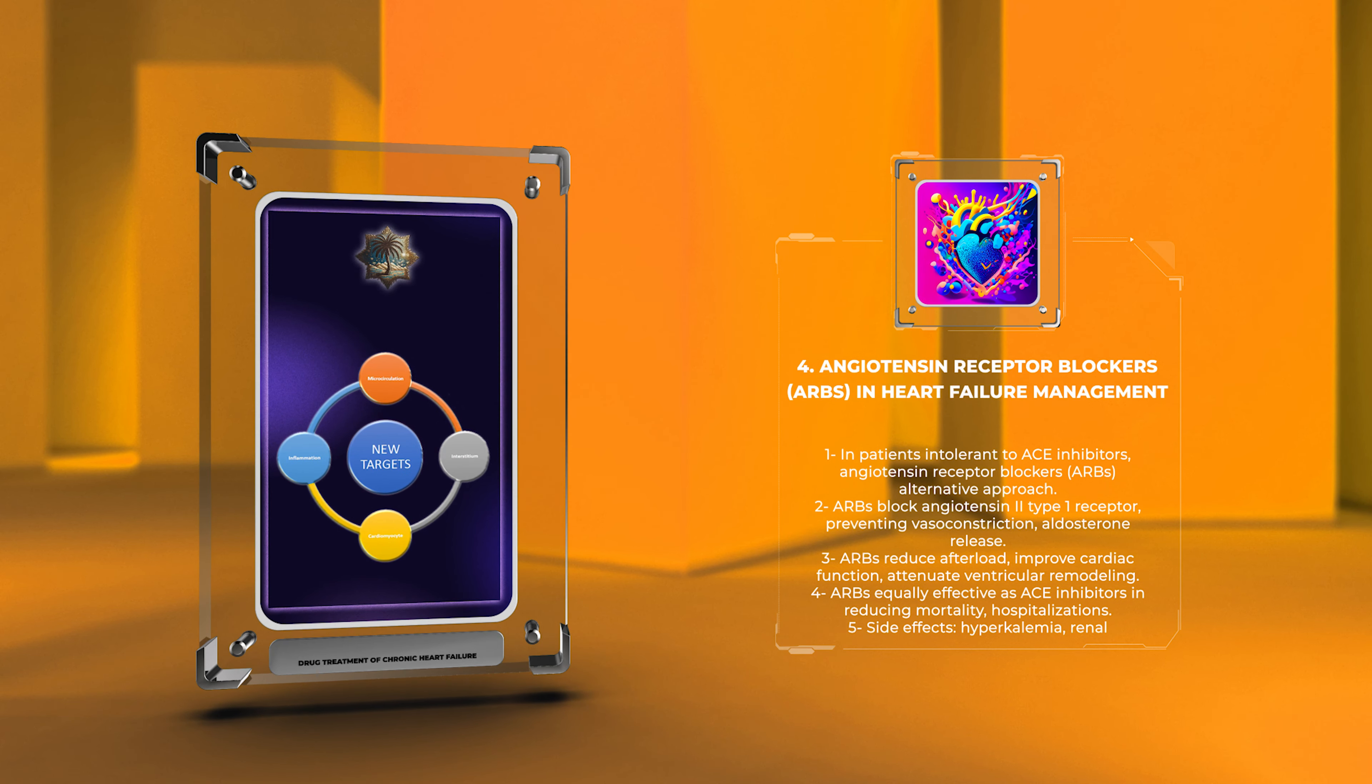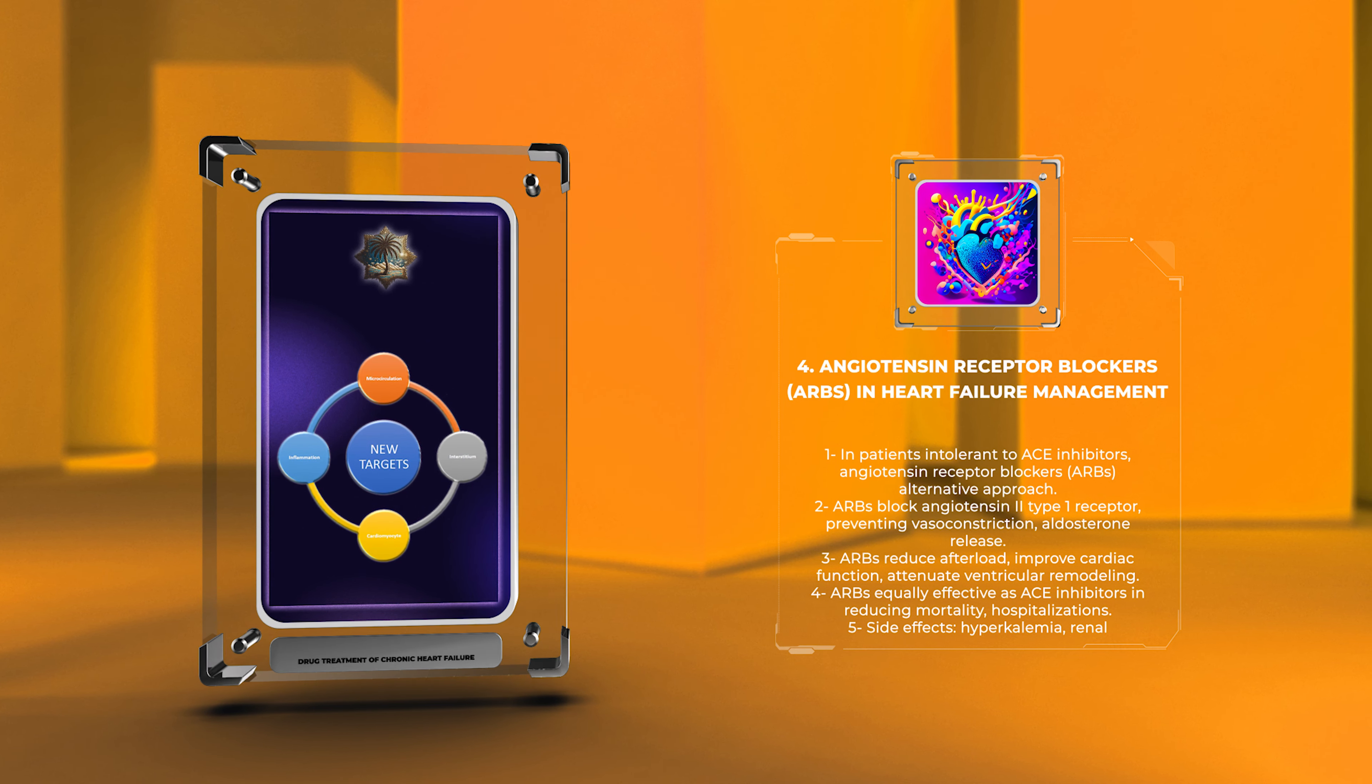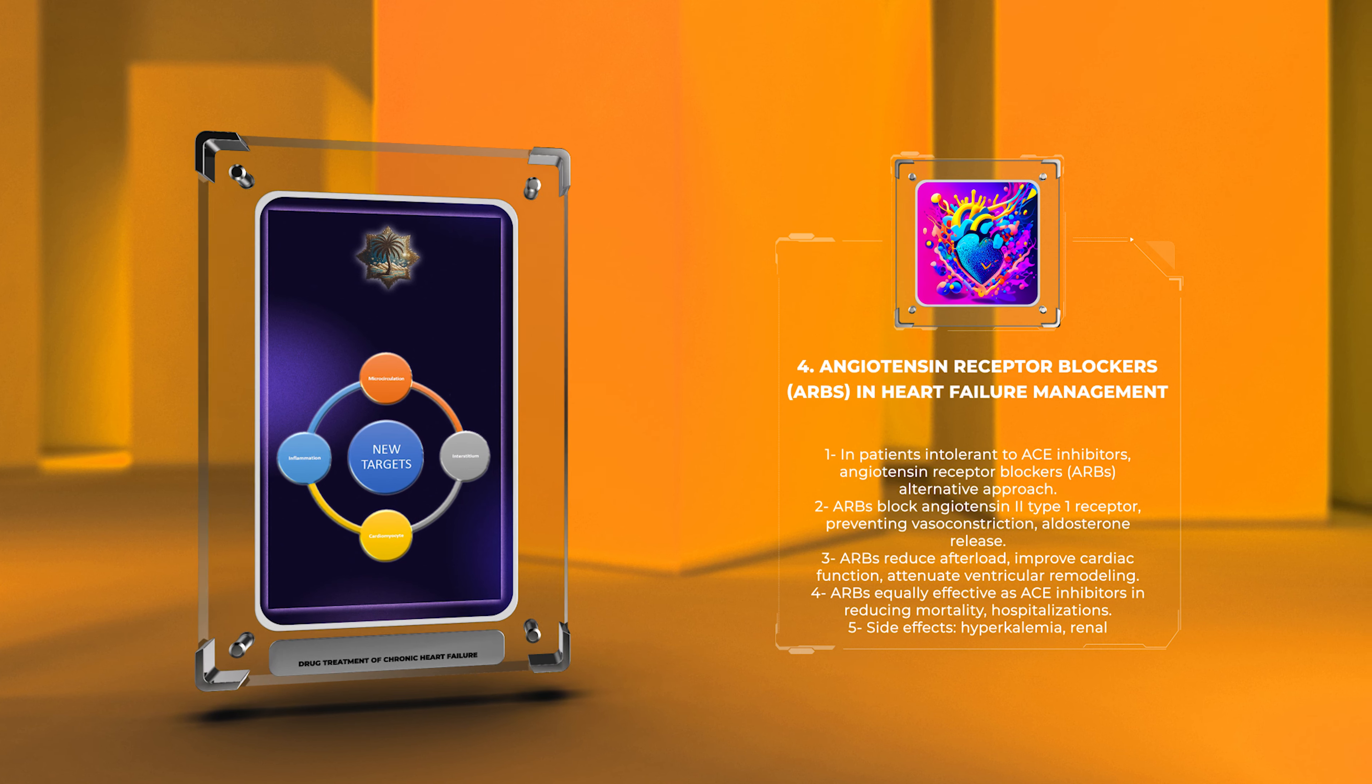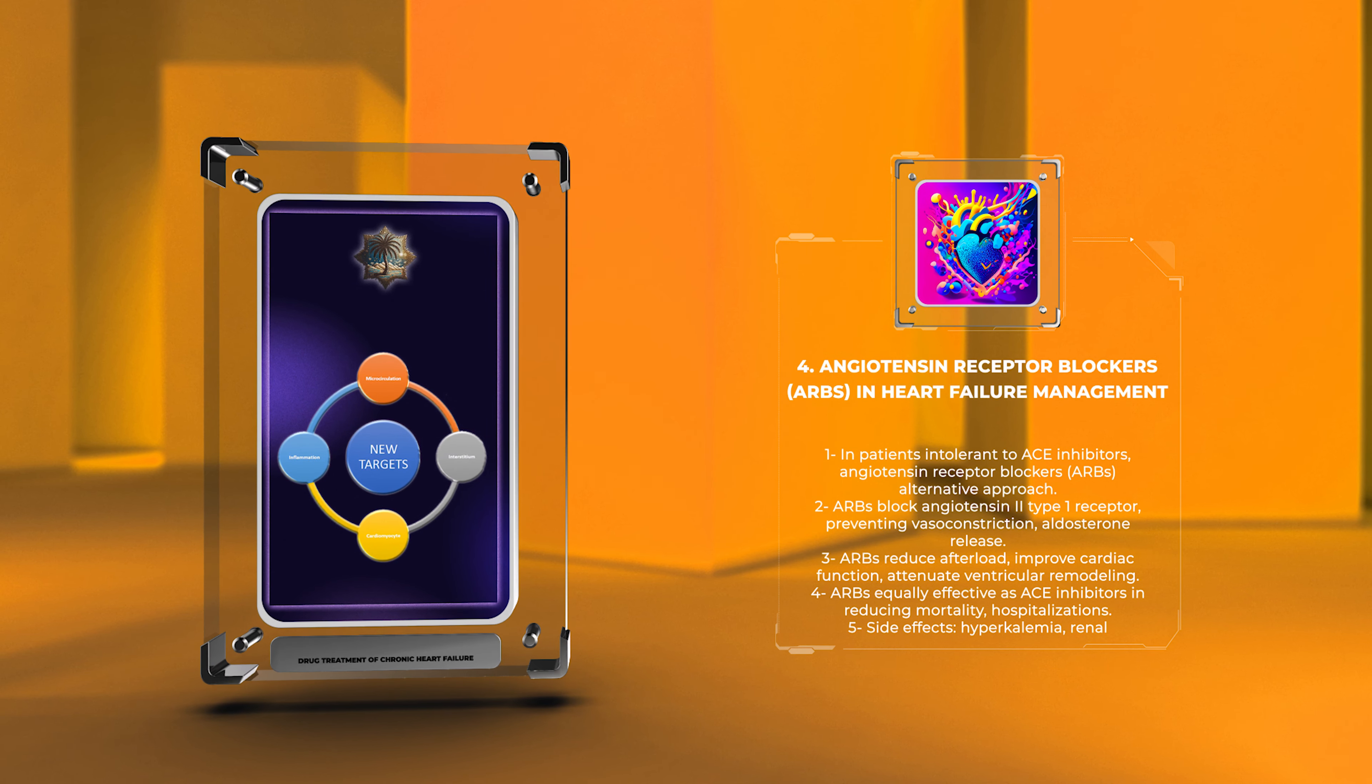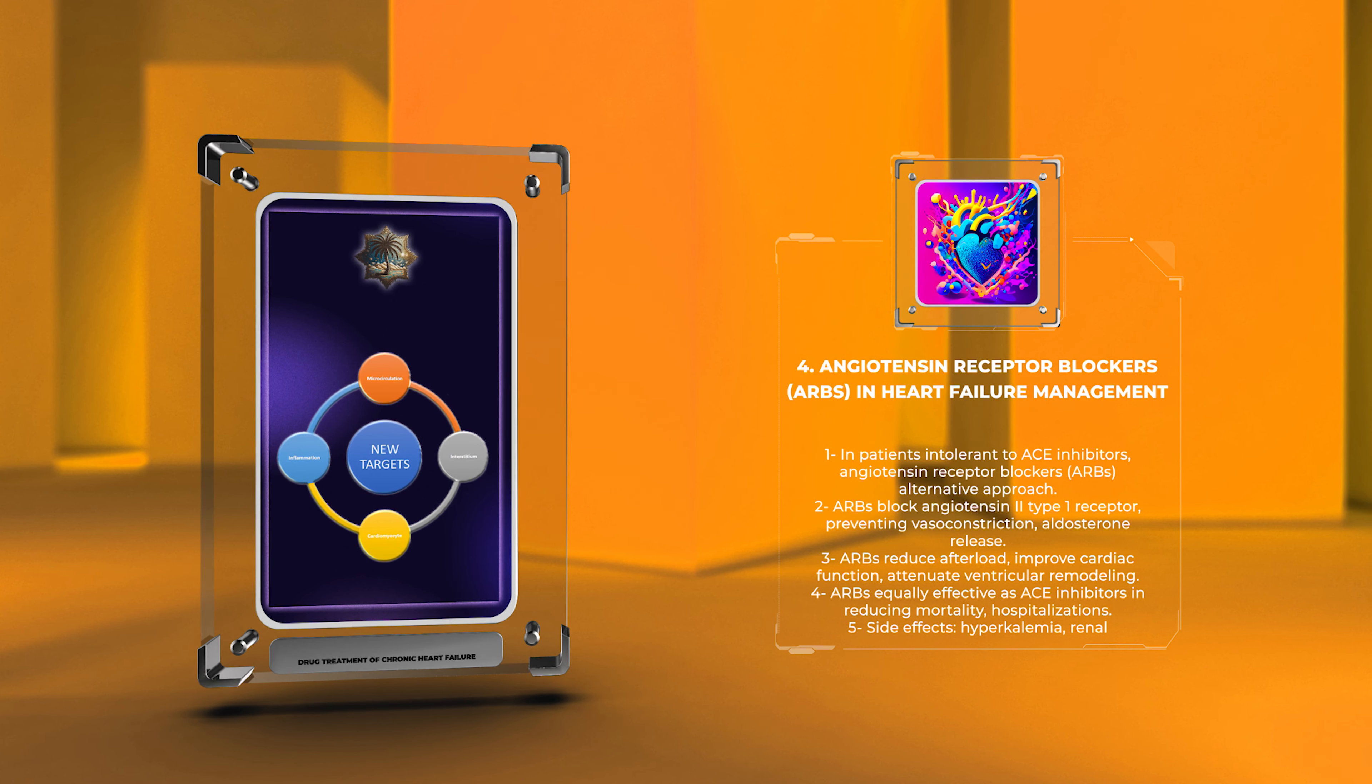Similar to ACE inhibitors, ARBs reduce afterload, improve cardiac function, and attenuate ventricular remodeling. Studies have shown that ARBs are equally effective as ACE inhibitors in reducing mortality and hospitalizations in patients with heart failure, particularly those with HFrEF.